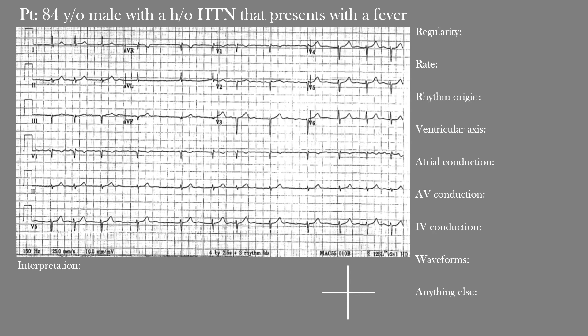Before we get started, let's review the approach we've been using to interpret EKGs. Notice that we have the patient's clinical presentation and the EKG below. On the right side of the screen we have a list that we'll go through before making our interpretation. First, there is the regularity of the rhythm — are we dealing with a regular or irregular rhythm, and if it's irregular, is it regularly irregular or irregularly irregular? Next we have the heart rate.